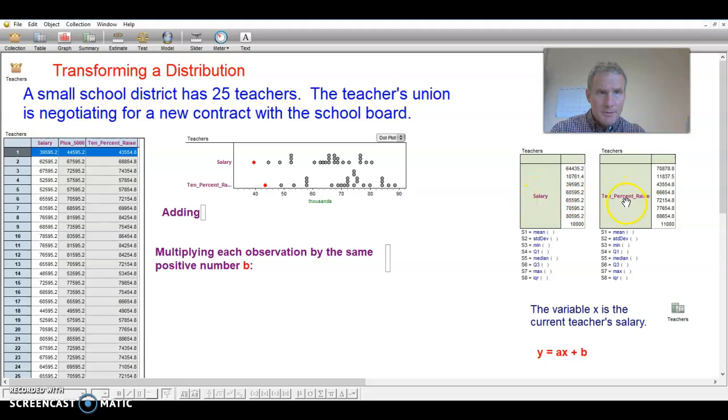The original salaries compared to the 10% raise. So the standard deviation went from 10,761 to 11,837.50. So it is a little more spread out. So actually, if you took $10,761.40 on your calculator and you multiplied by 1.1, do you think you would get this standard deviation? Yes, you would. So we can see some changes in variability.